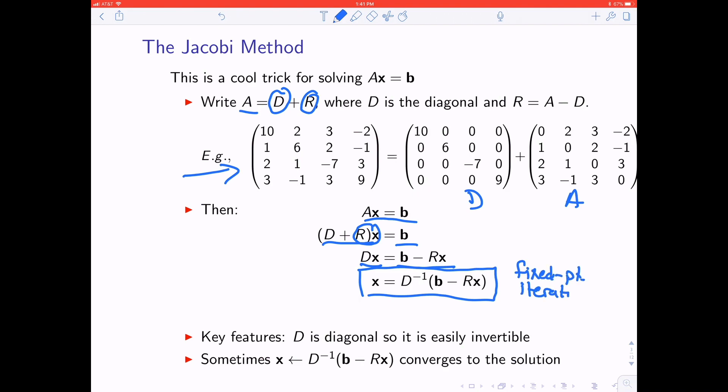You just keep repeating, hoping that you converge to a place where when you plug in for X on the right, you get out the same thing for X on the left. Notice that since D is a diagonal matrix, calculating D inverse is really easy.